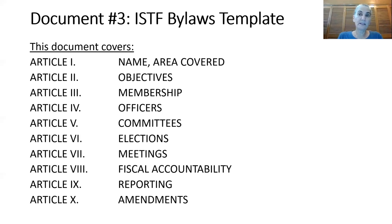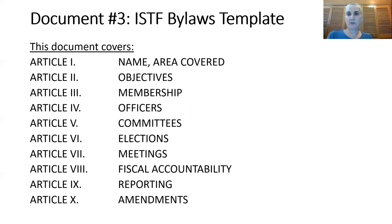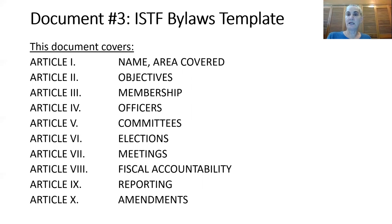The next step is to look at the components that go into the ISTF bylaws template — a recipe or template you can use for mapping out bylaws for your chapter. There are 10 articles. The first is name and area covered. Second is your chapter objectives. Third is about membership rights and obligations. Fourth is about officers. Fifth is about committees. Six is about your elections — how you're going to elect your officers.